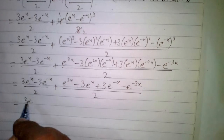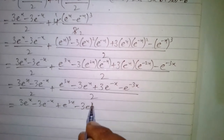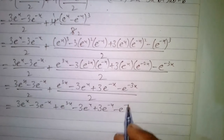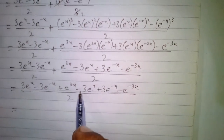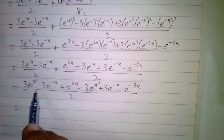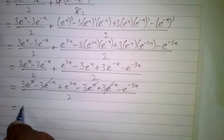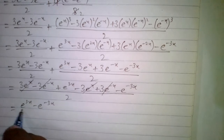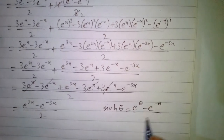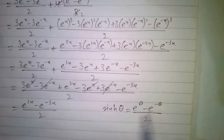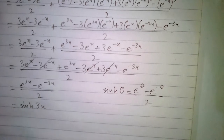This gives us 3 times e to the power x minus 3 times e to the power minus x, plus e to the power 3x minus 3 times e to the power x plus 3 times e to the power minus x minus e to the power minus 3x, all upon 2. Now we can cancel 3 times e to the power x with minus 3 times e to the power x, and also cancel minus 3 times e to the power minus x with plus 3 times e to the power minus x. So we have e to the power 3x minus e to the power minus 3x, upon 2, which equals hyperbolic sine of 3x — which was to be shown.